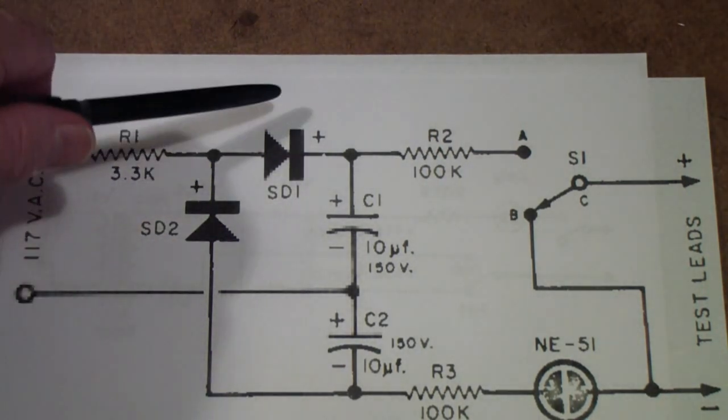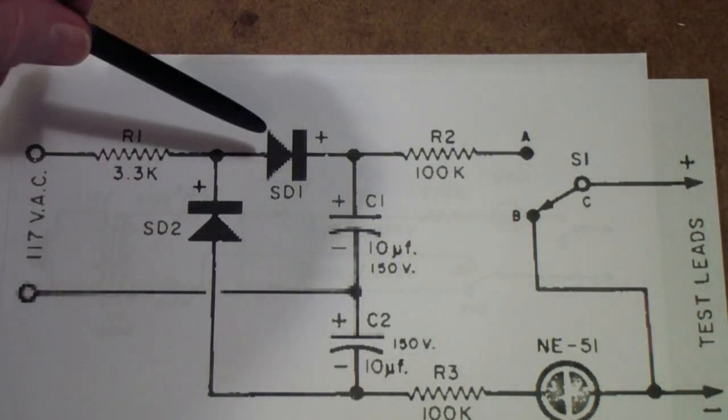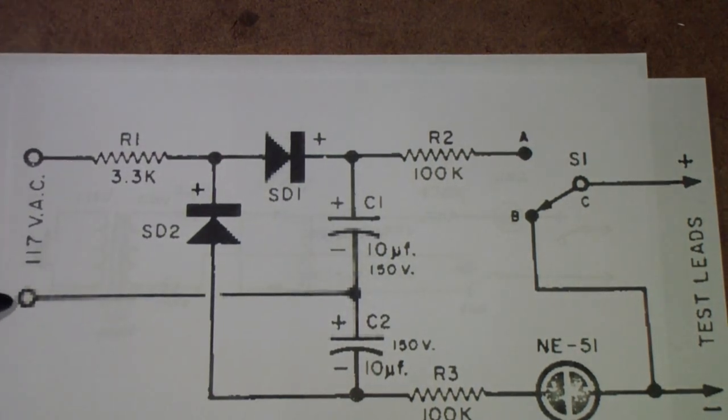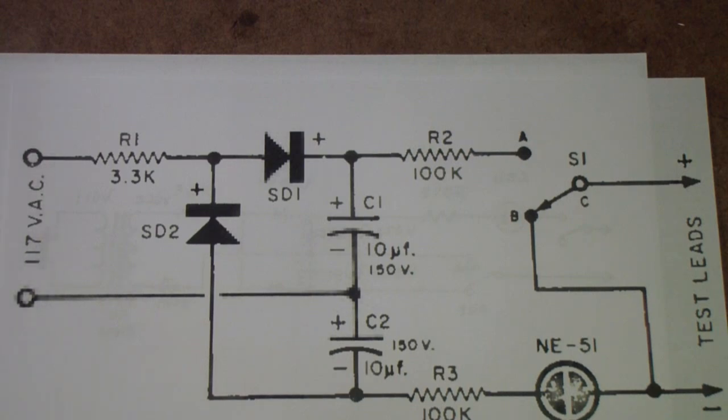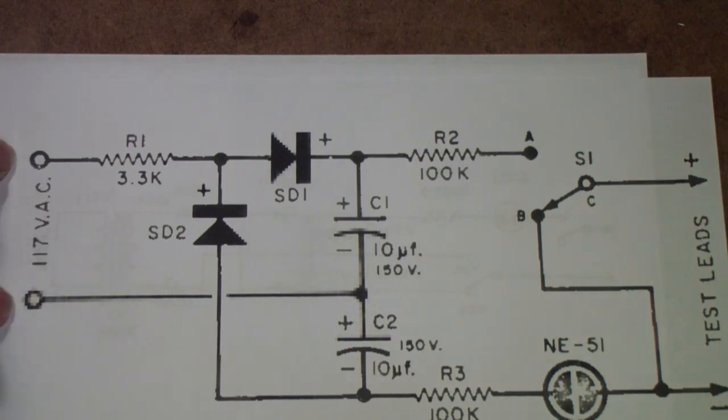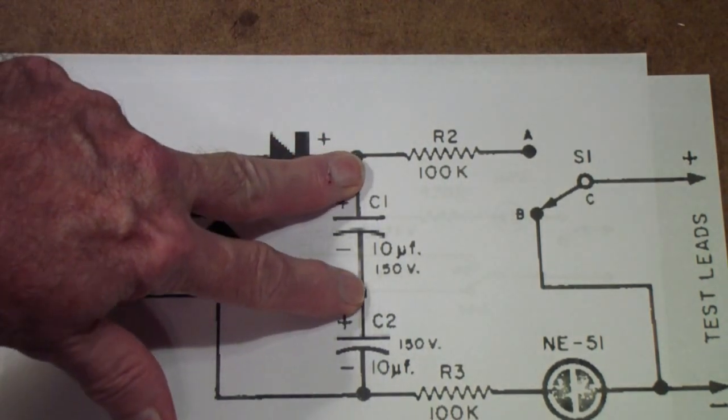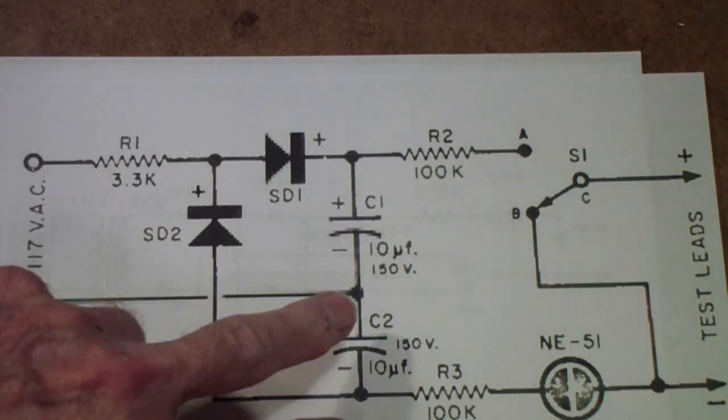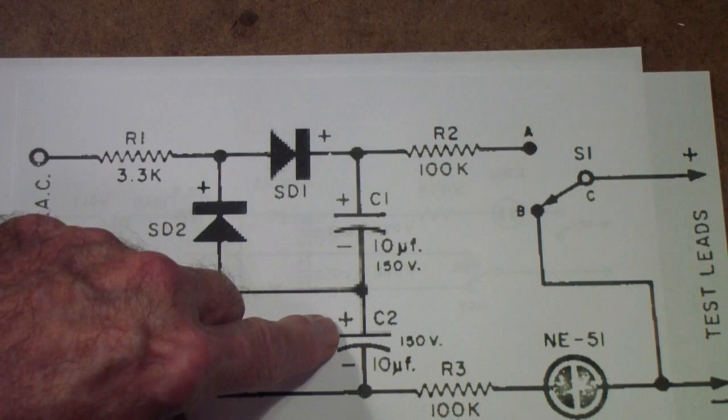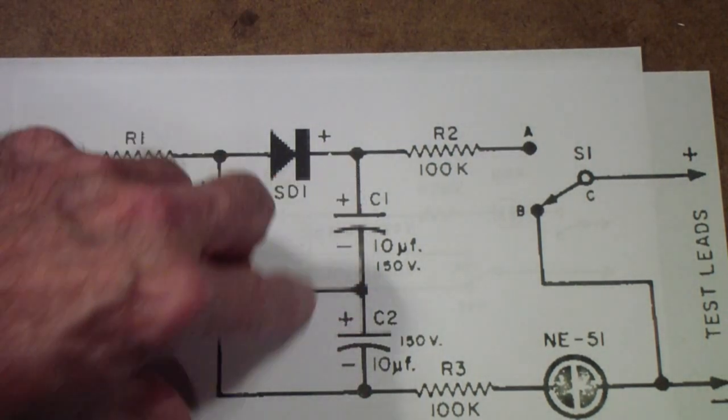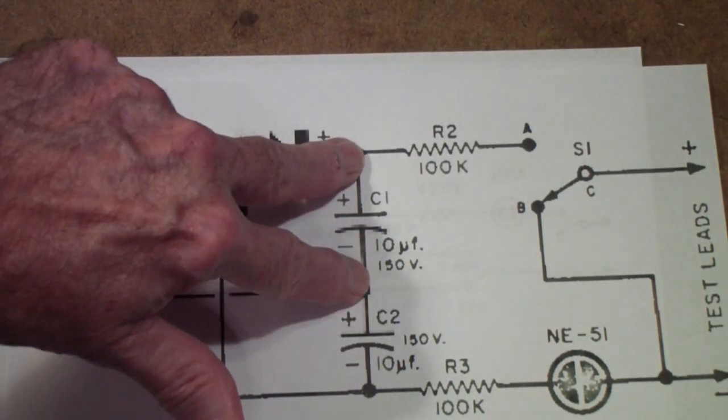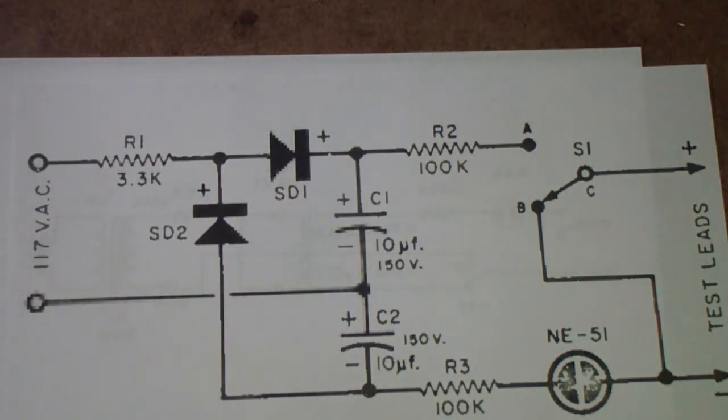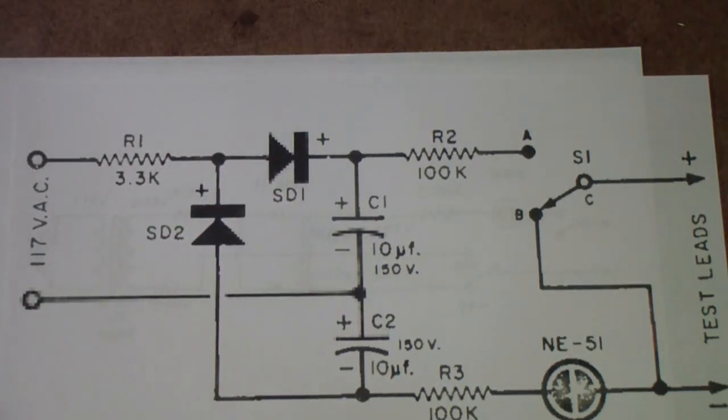Applying the test voltage, the current that flows through the capacitor also flows through this NE51 with approximately 200k in series with it. You'll notice that this is actually a voltage doubler. It takes the 110 volts or 120 volts line voltage, and it doubles it. It puts 120 volts across this capacitor with plus at the top. It also puts 120 volts across this capacitor with plus at the top. Because they're in series, the 120 volts here and the 120 volts here add together to produce a total test voltage of around 240 or 250 volts.